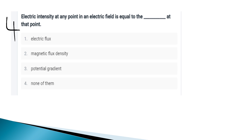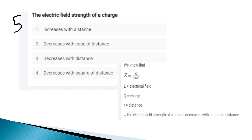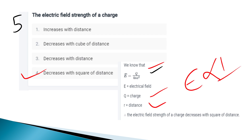Electric intensity at any point in an electric field is equal to the potential gradient at that point. Electric flux, magnetic flux density, and potential gradient — the answer is potential gradient. The electric field is the force per unit charge, given by Q divided by 4π·ε·r². The electric field decreases with the square of the distance — it is inversely proportional to r².